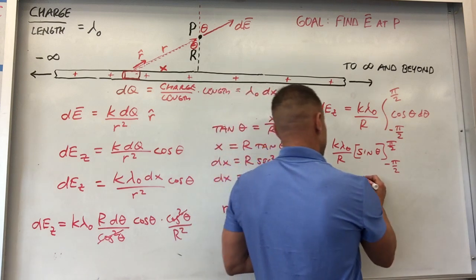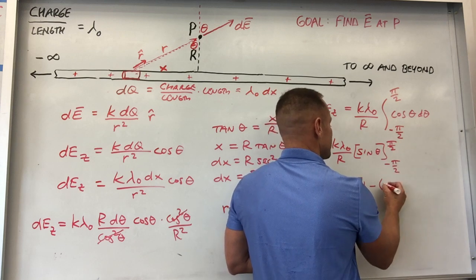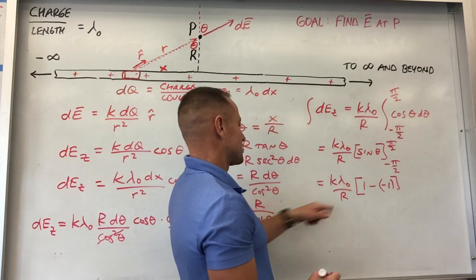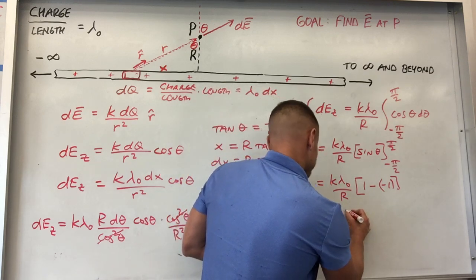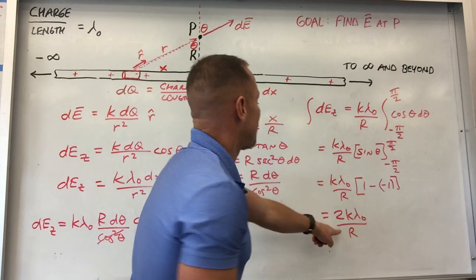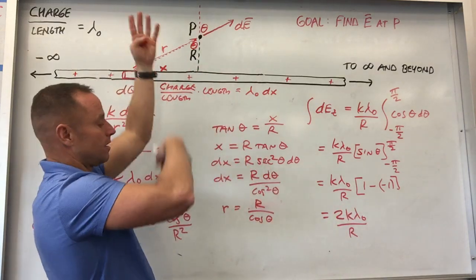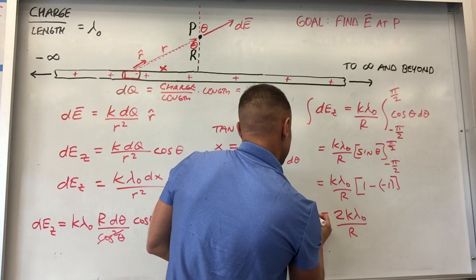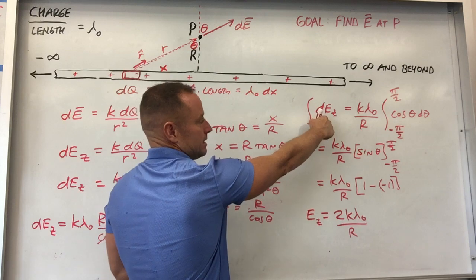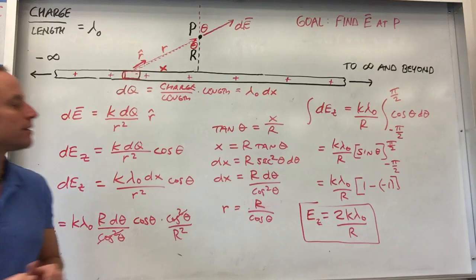And then minus sine of minus 90 degrees, basically, or minus pi over 2 is negative 1. And so finally, in all its glory, you get 2 K lambda naught over R. So the field falls off like 1 over R from this thing as you go away from the wire. So that's going to be the total field E in the Z direction. Because you integrate DE_Z, you'll get the total field E_Z. So there is the field in the Z direction.